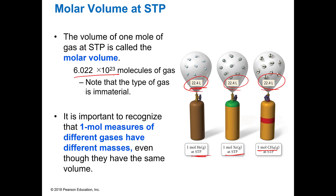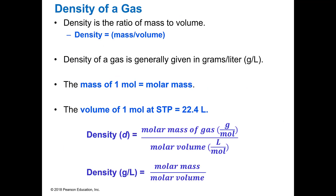It's important to recognize that this doesn't matter what kind of gas it is — it's always going to be the same. But it must be at STP; it can't be at 23 degrees or anything else. It has to be 0 degrees C. The density of a gas is the ratio of its mass to volume. We've seen density before and it was always mass per unit volume. In gases, though, since we take up a lot bigger space, instead of grams per milliliter, we use grams per liter.